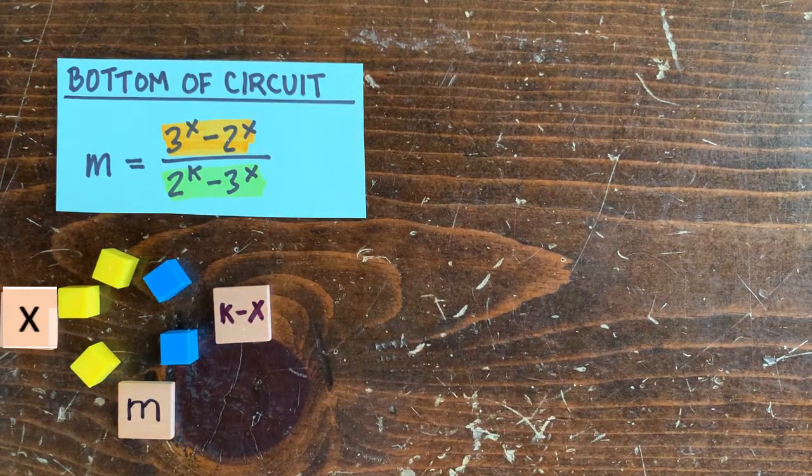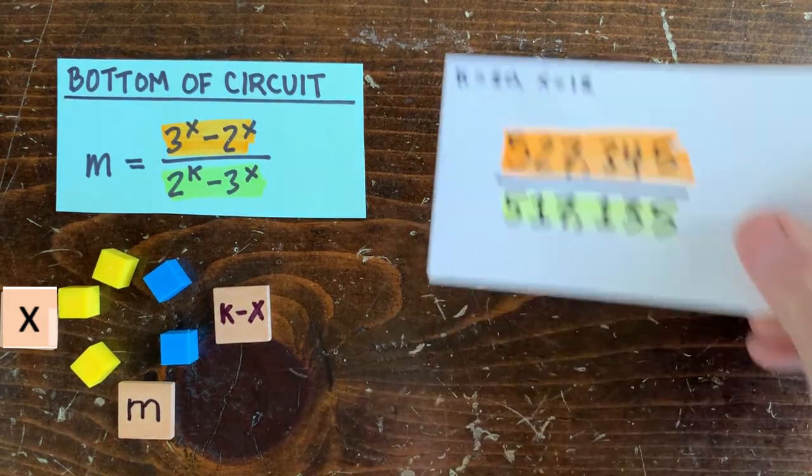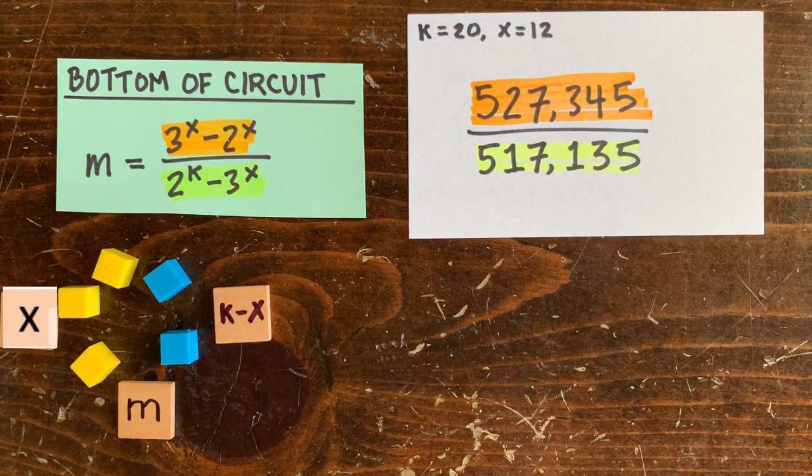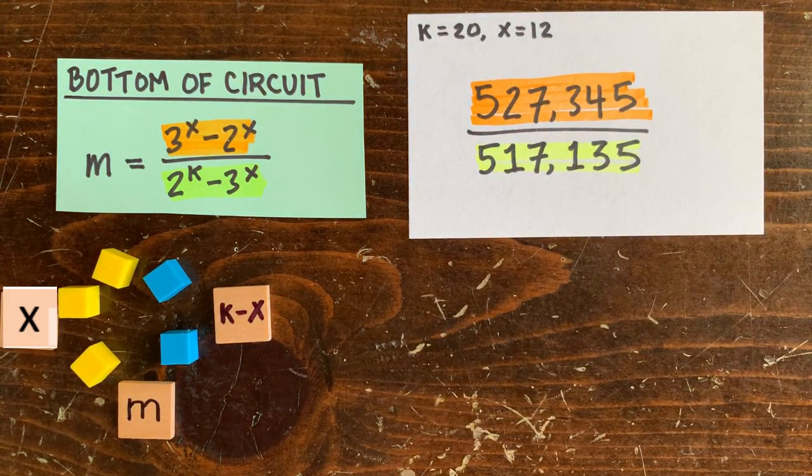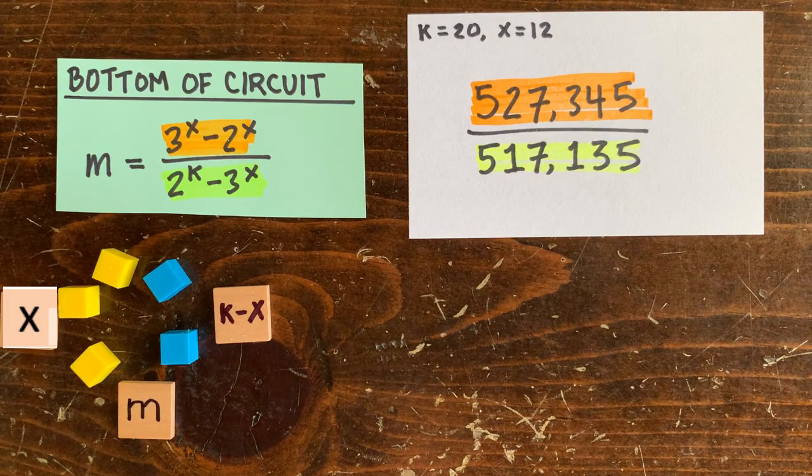Let's take k equals 20, x equals 12. Is 527,345 divisible by 517,135? I don't think so, just by looking at it.